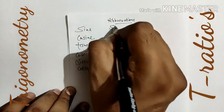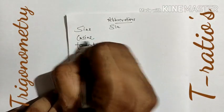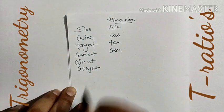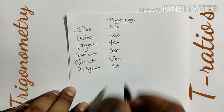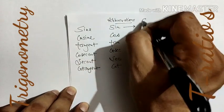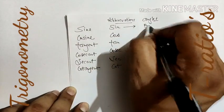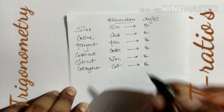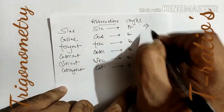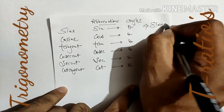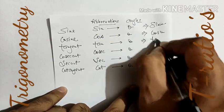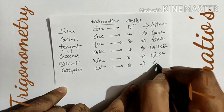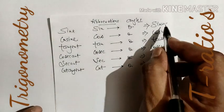We use short-form abbreviations: for sine we write sin, for cosine we write cos, for tangent we write tan, for cosecant we write cosec, for secant we write sec, and for cotangent we write cot. These are always used in combination with an angle, such as theta. So: sin θ, cos θ, tan θ, cosec θ, sec θ, cot θ — these are meaningful only together with an angle.